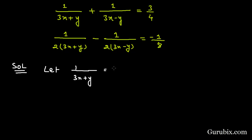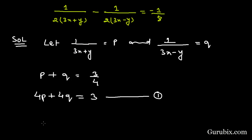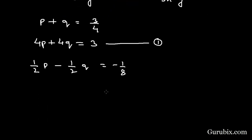Let 1 over (3x + y) equals p and 1 over (3x - y) equals q. Then our first equation becomes p + q = 3/4. Multiplying both sides by 4, we get 4p + 4q = 3 — this is equation number 1. The second equation becomes (1/2)p - (1/2)q = -1/8. Multiplying both sides by 8, we get 4p - 4q = -1 — this is equation number 2.